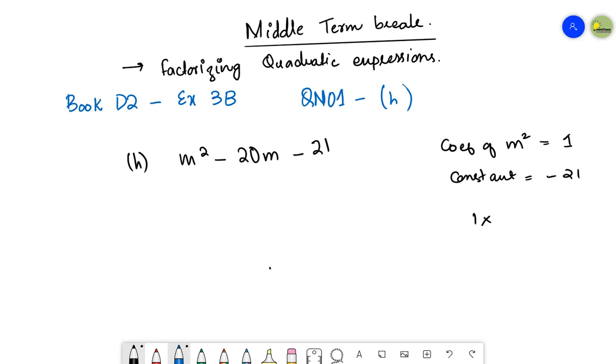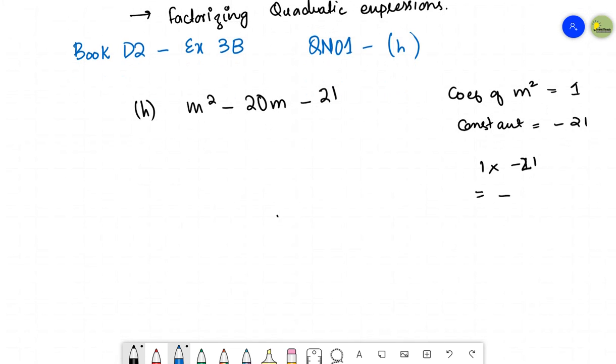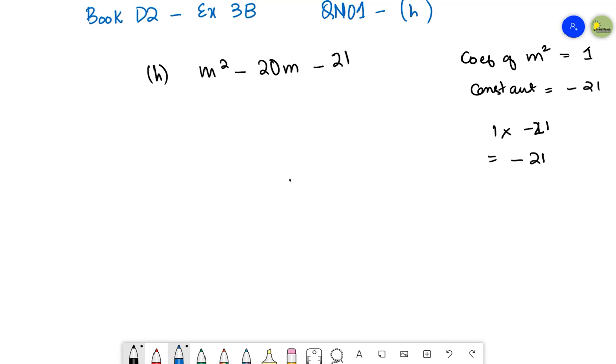Now we need to multiply them. 1 multiply by -21 is -21. Now find out the factors of 21. 21 comes in 3's table: 3 × 7 = 21.